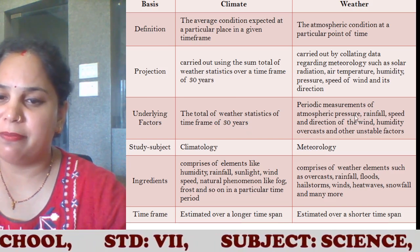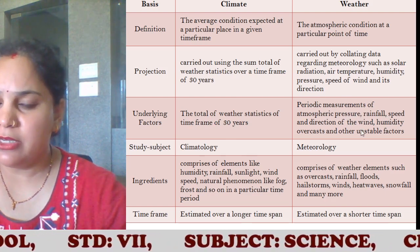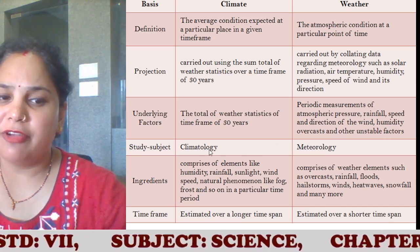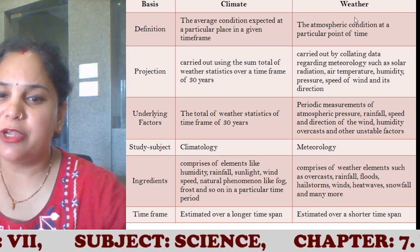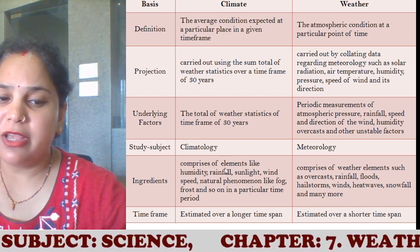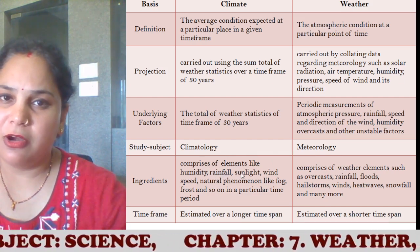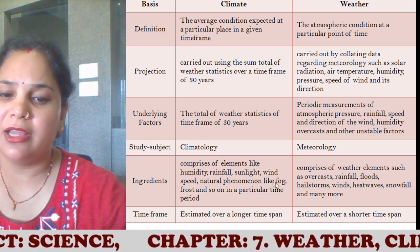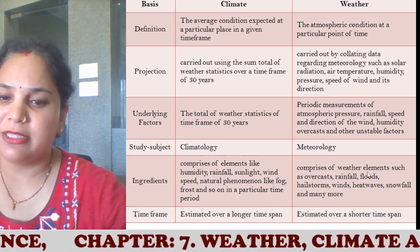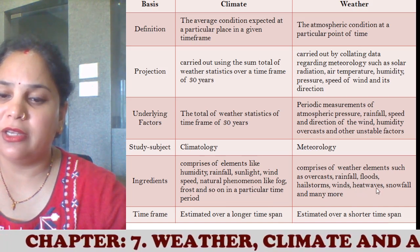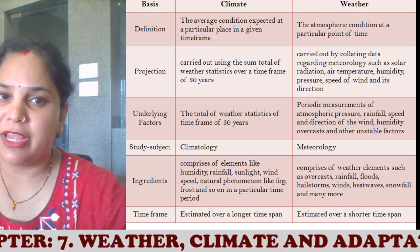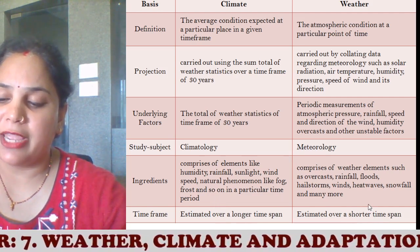Weather involves periodic measurements of atmospheric pressure, rainfall, speed and direction of wind, humidity, overcasts, and other unstable factors. The study of climate is called climatology, and the study of weather is called meteorology. The ingredients of climate include elements like humidity, rainfall, sunlight, wind speed, and natural phenomena like fog and frost over a particular period. Weather comprises elements such as overcast, rainfall, floods, hailstorm, wind, heat waves, snowfall, and many more. Climate is estimated over a long period of time, while weather covers a shorter time span.